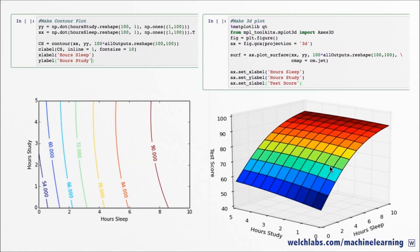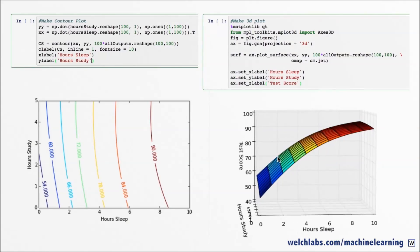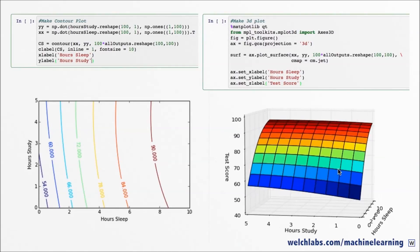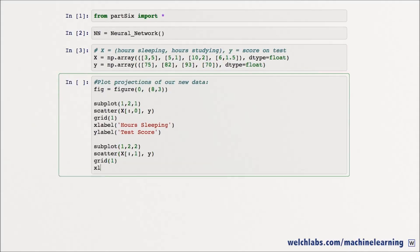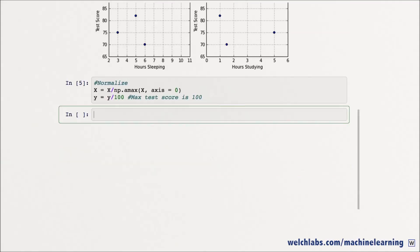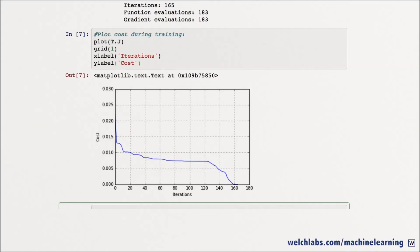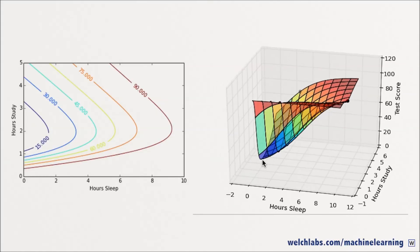Last time we showed our model predictions across the input space for various combinations of hours sleeping and hours studying. We'll change our data a bit to make overfitting more obvious, and retrain our model on the new dataset. If we re-examine our predictions across our sample space, we see some strange behavior.